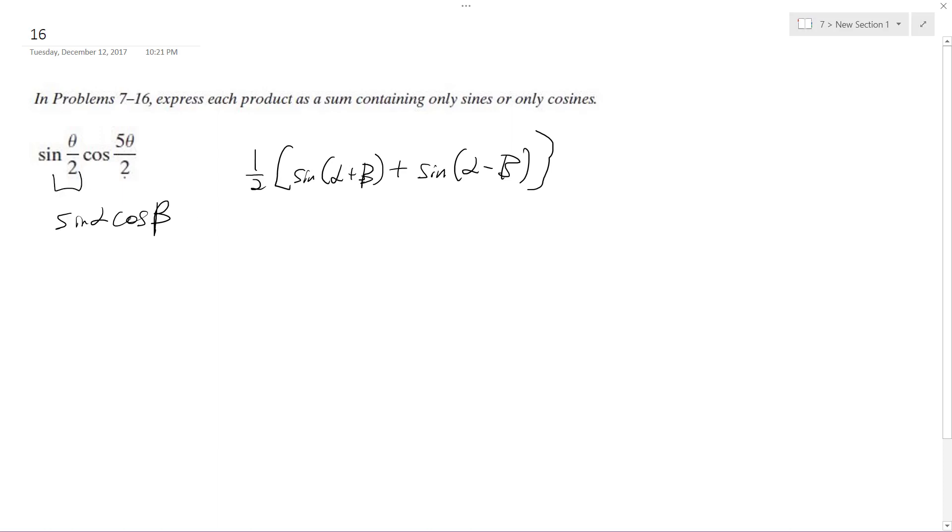Alright, so this will be our alpha, this will be our beta, so we'll have one half of sine theta divided by 2 plus sine of theta divided by 2 minus 5 theta divided by 2.